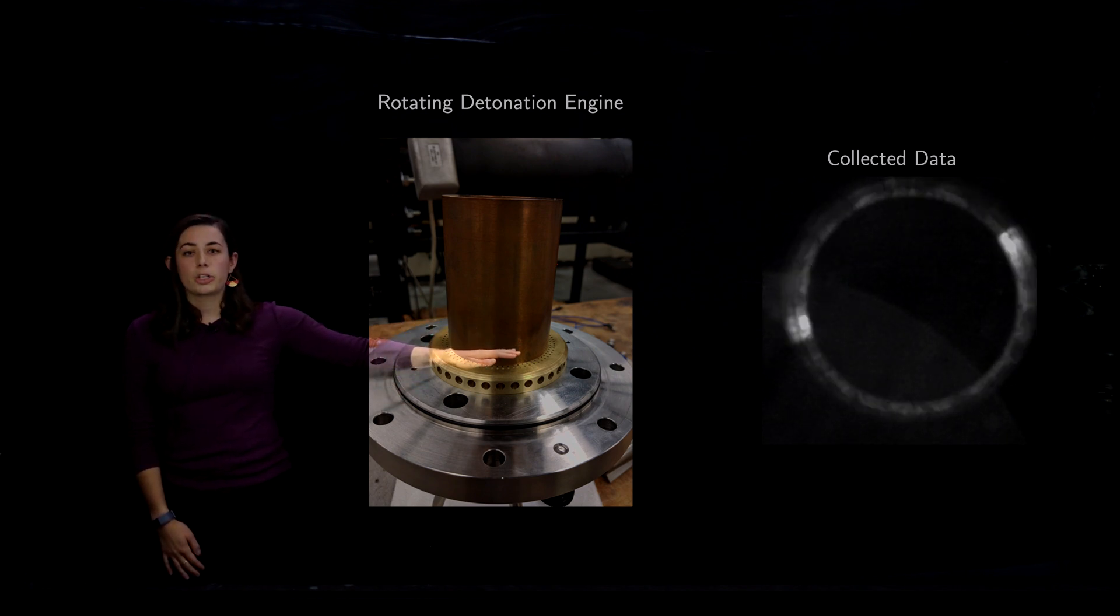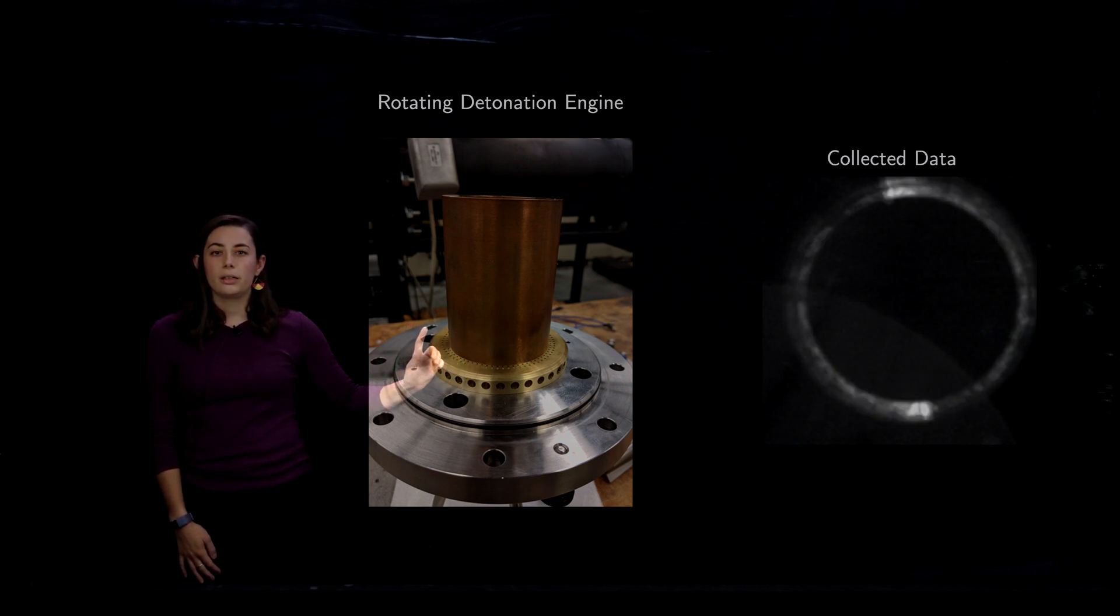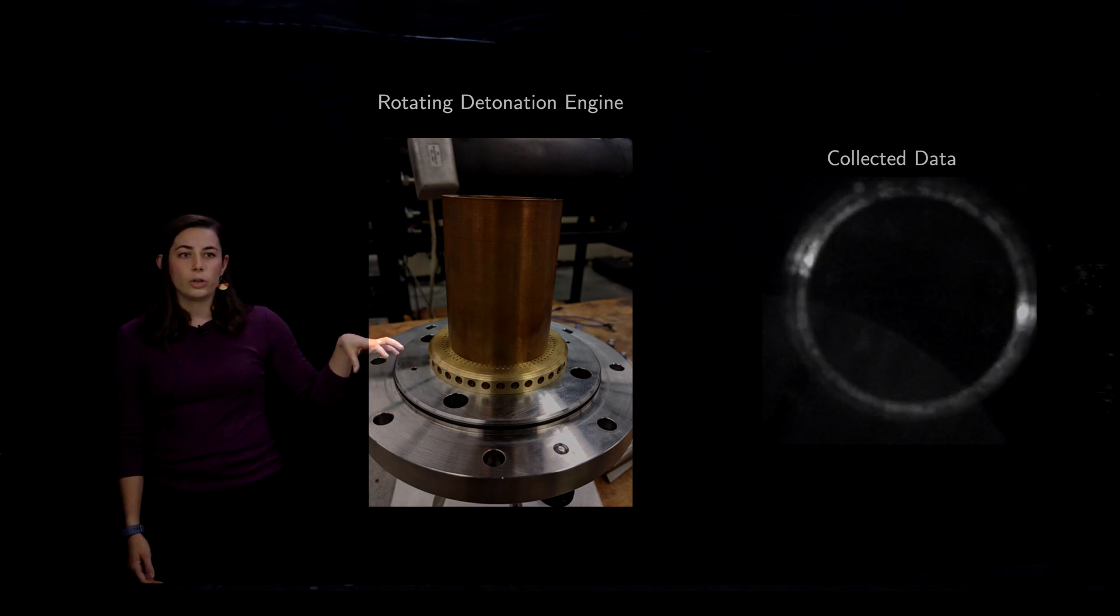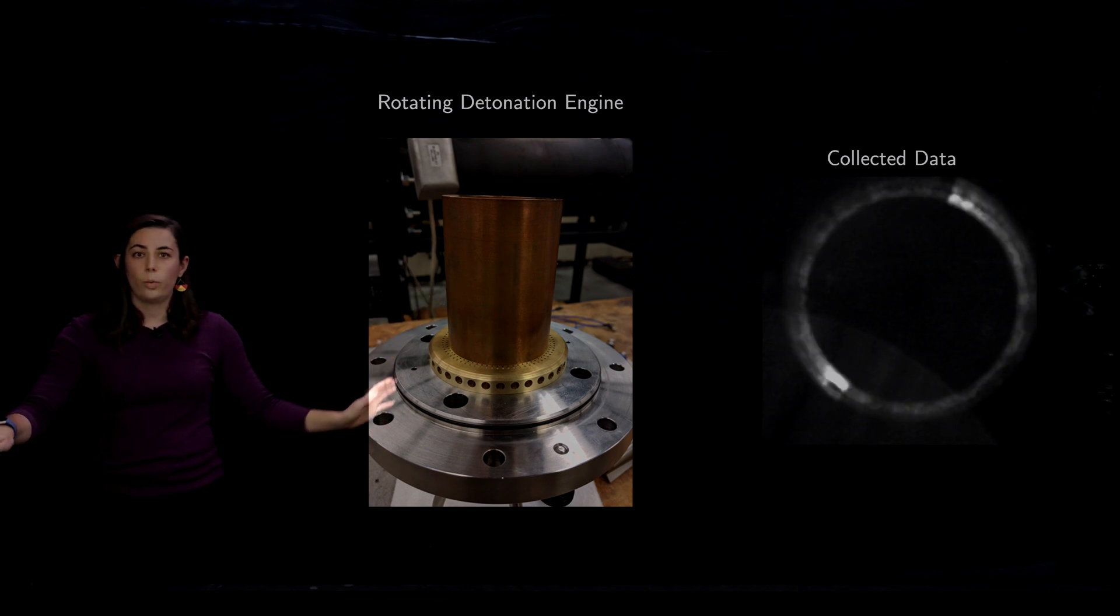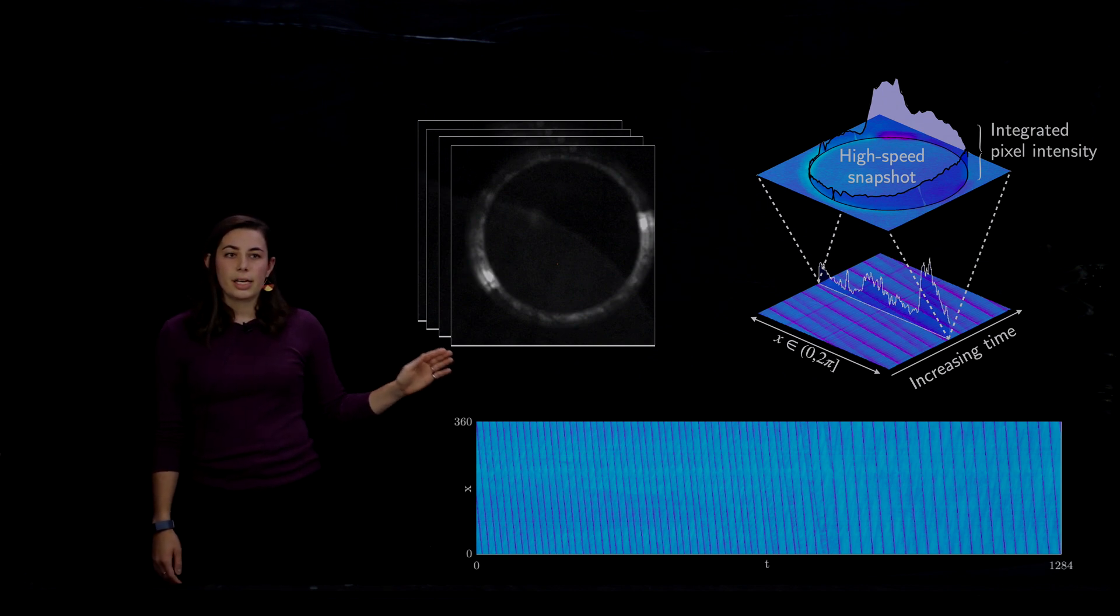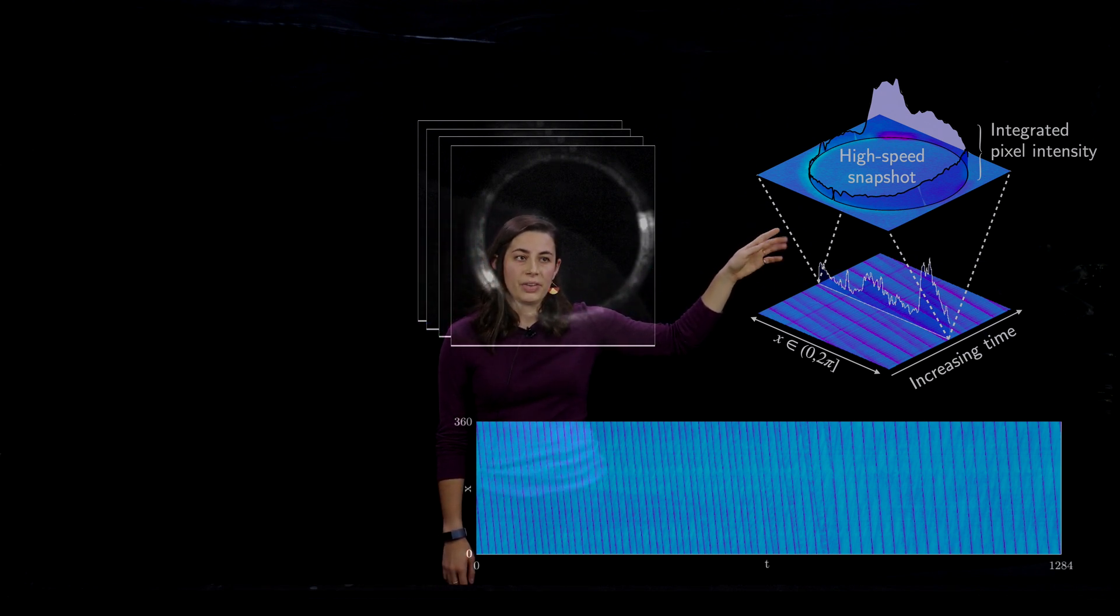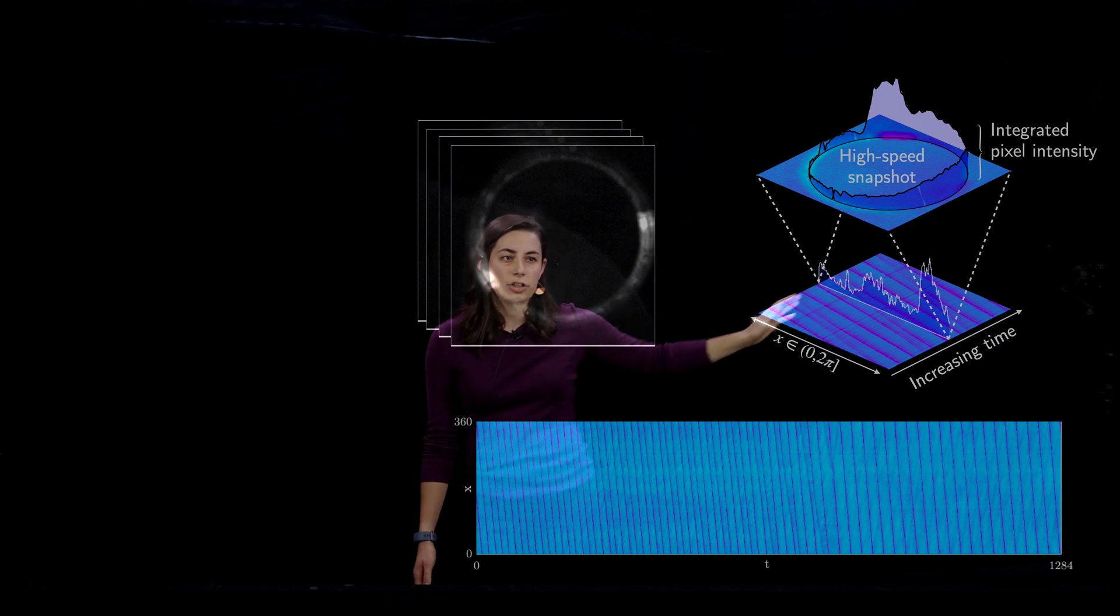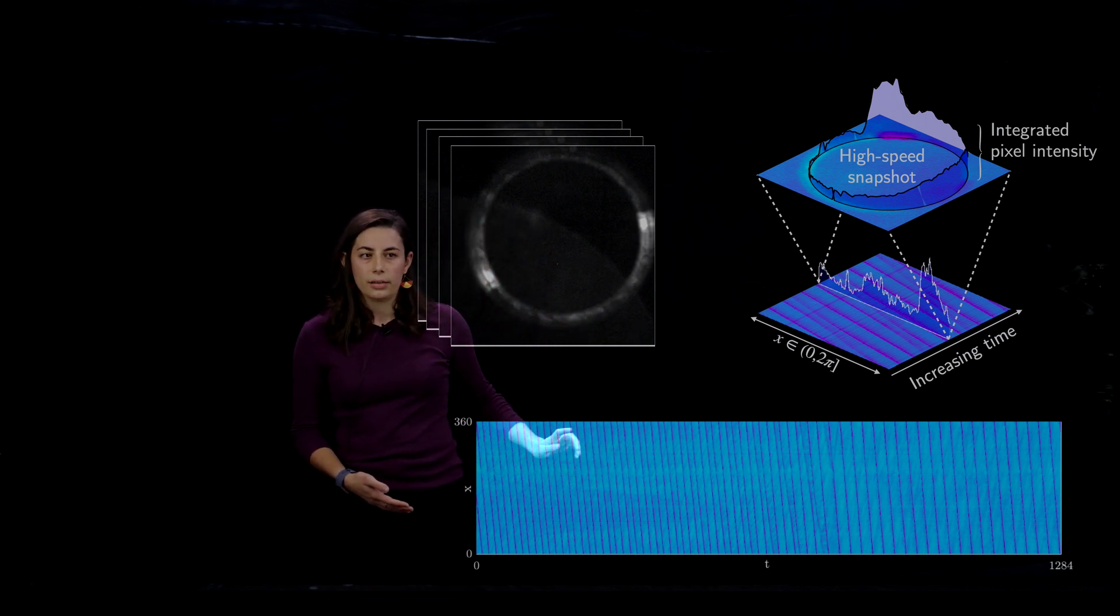So here is an example of a real rotating detonation engine where we collected our experimental data here at the University of Washington, thanks to James Cook for our information. And we have a video of the actual collected data. So as the waves rotate around the chamber and exhibit bifurcations and nonlinearities, which are not well understood, we can take this video looking down the annulus of the chamber and find the pixel intensity of these different wave fronts.